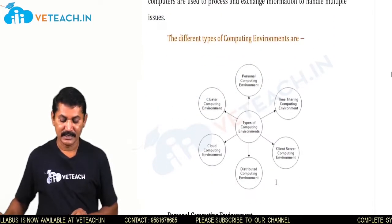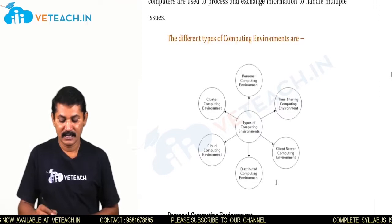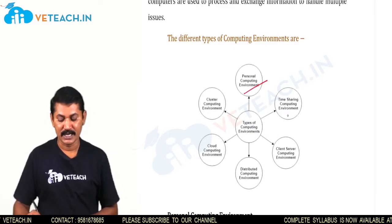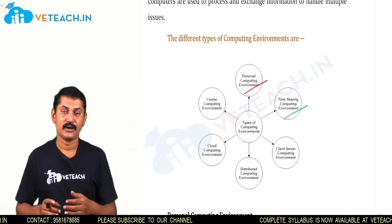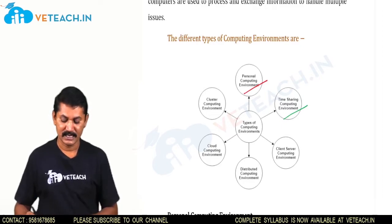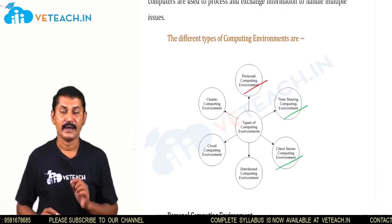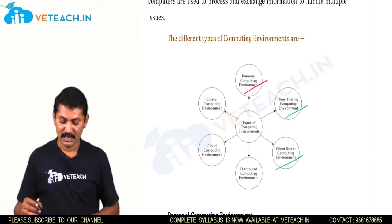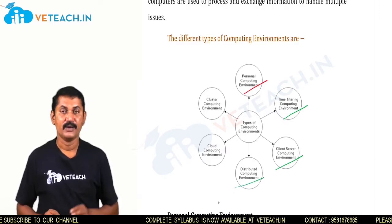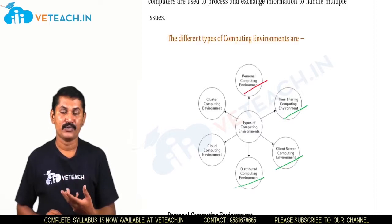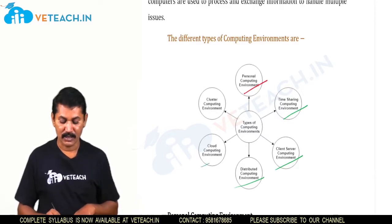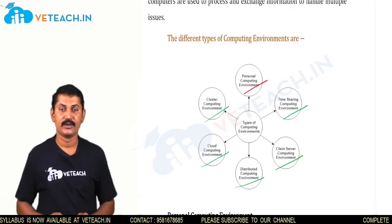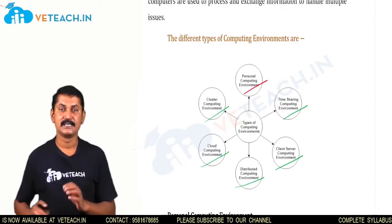Here you can see there are different computing environments. The first one is the personal computing environment, handled by a single user. Next is the time sharing computing environment, which involves time sharing of the CPU by processes. Then there is the client-server computing environment, where a main system provides services to clients by sharing all resources. Next is the distributed computing environment, the wireless environment, cloud computing environment, and cluster computing environment. We are going to study all these environments and how the operating system acts in each.